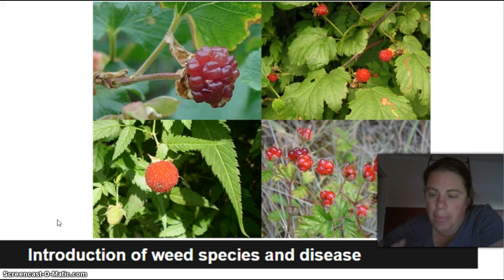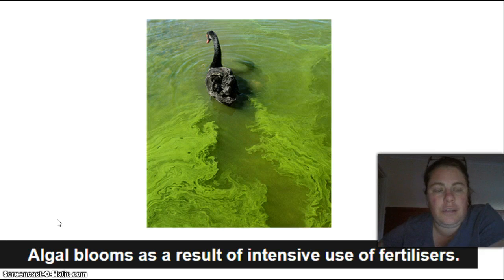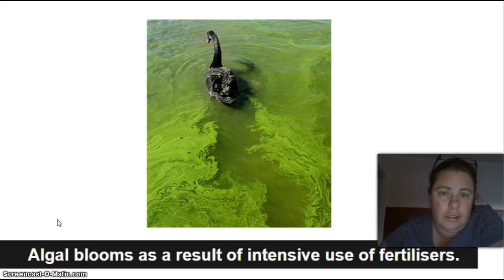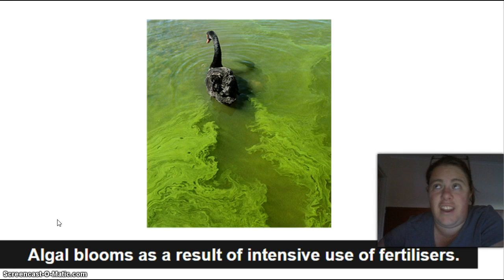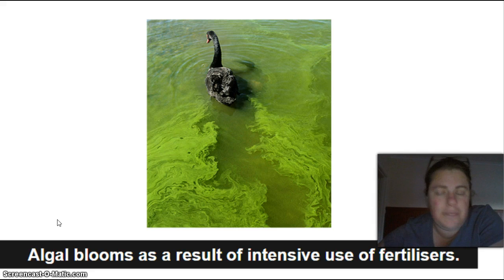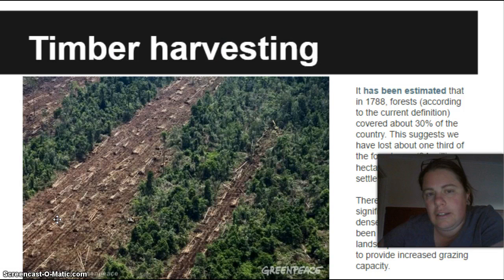Last but not least for agriculture: algae blooms occur when crops near water sources are fertilized to protect them from insects and pests. All that fertilizer ends up in waterways, which can't process it well, so you get algae blooms. Algae thrives, the water looks awful, fish can't breathe in it, and the ecosystem suffers.